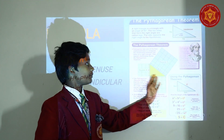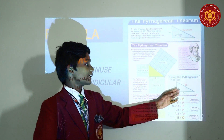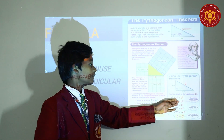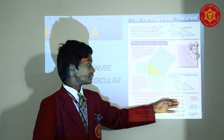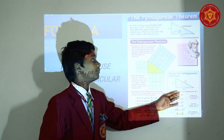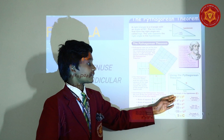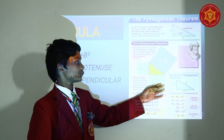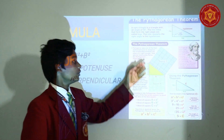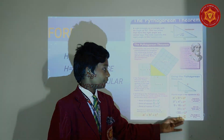If we take the value of the altitude as 3 cm and the base as 4 cm, we will use the formula A square plus B square is equal to C square, where C square is equal to the hypotenuse, B square is equal to the base, and A square is equal to the altitude. If we do it, we will get the answer as 5.